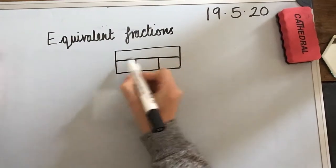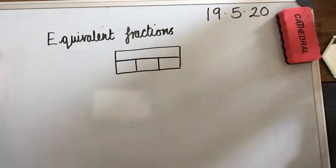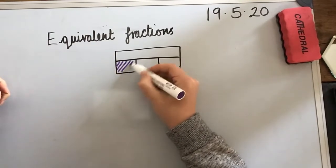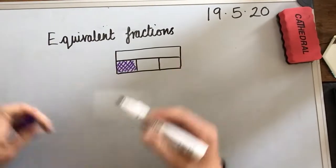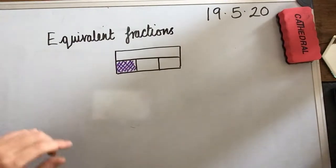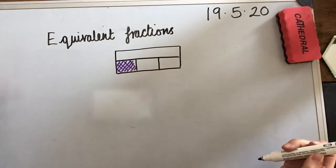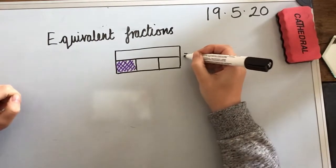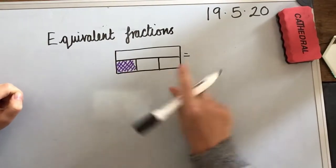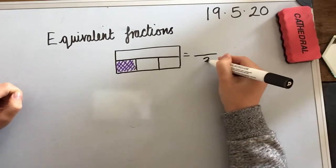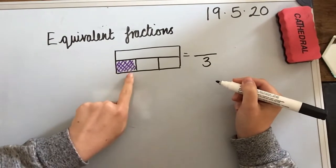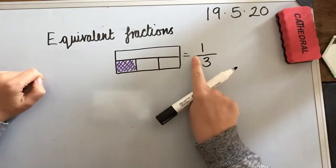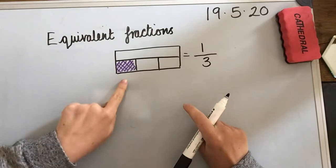So, I'm going to draw a bar model here for you. This is the whole amount, and this is showing you a fraction. I'm going to colour one of the sections in. Can you remember your work from yesterday? What fraction have I coloured in there? Well, there's three equal pieces, so that will be my denominator. And how many parts are we looking at? We're looking at one. So, that becomes one third.